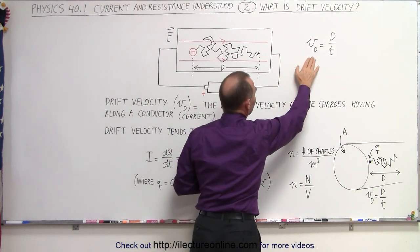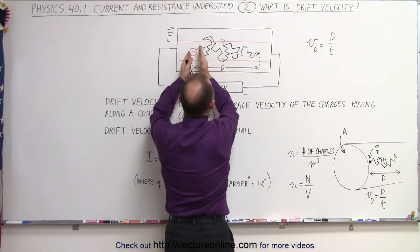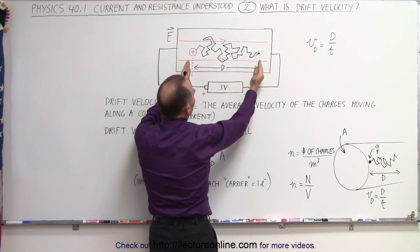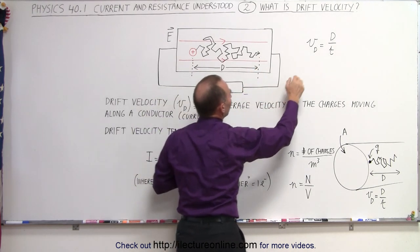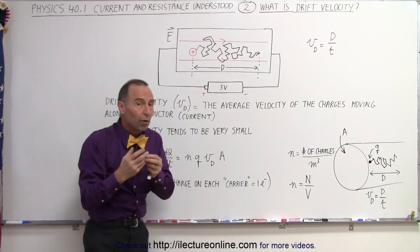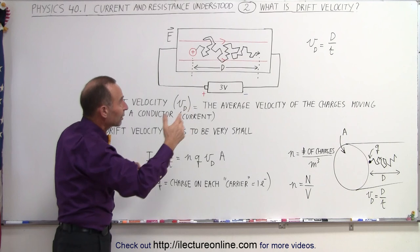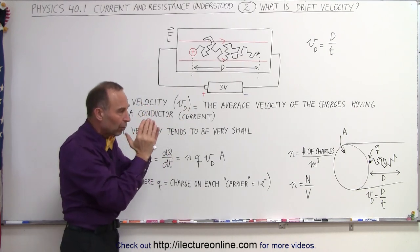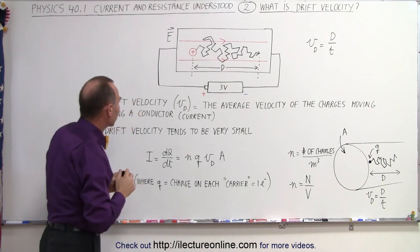So, the drift velocity ends up being the average velocity of the charges moving along the conductor. If they move this far in a certain amount of time, we can say that the drift velocity is d over t, and d will be a relatively small value, even though a long time has gone by, because they really do bump around a lot, and all of them move kind of slowly down the conductor.